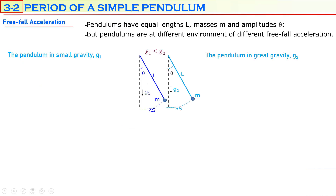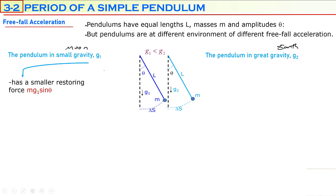The last quantity is free-fall acceleration. This time, the pendulums have the same mass, length, and amplitude, but are in different environments — one is on the moon with smaller gravity, the other is on Earth with greater gravity. The pendulum with smaller free-fall acceleration has a smaller restoring force, mg1 sine theta, while the pendulum on Earth has a greater restoring force, mg2 sine theta, because g2 is greater than g1.